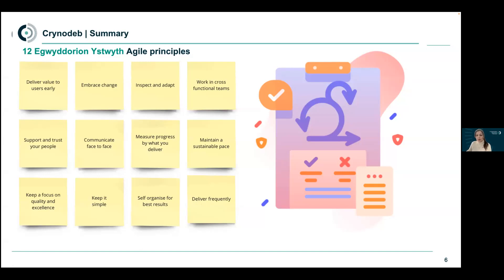The other Agile principle this delivery framework helps with is embracing change. We've all felt the pain of a plan that proves wrong on day two of execution, or been excited with an idea that falls on its face because we based it on incorrect assumptions. So Agile gives us the space to embrace change. The final one this methodology helps with is inspect and adapt — reviewing what we're doing every few weeks, both from a delivery perspective and how the team's been working, is ultimately powerful. This also requires a level of psychological safety so people can try things safely without fear of being reprimanded for failure.